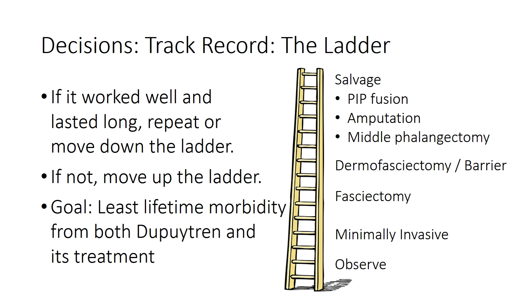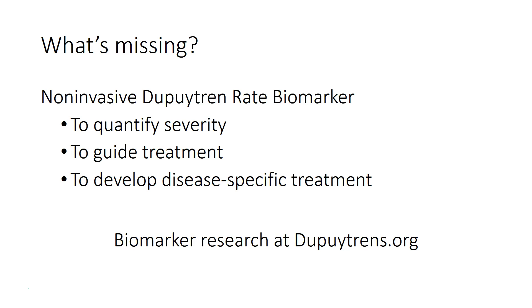If someone has had prior treatment, did well, and it lasted for years before recurrence, it's reasonable to repeat that same procedure if they were happy with the result — or consider moving down the reconstructive ladder to something less invasive. If someone didn't do well, had a bad result, or had rapid recurrence after their prior procedure, consider moving up the ladder. If you think diathesis was a factor, consider moving up two rungs, because the goal is to reduce lifetime morbidity from both Dupuytren's underlying biology and our treatment. All of these decisions would be very different if we had some quantitative measure of Dupuytren biology.